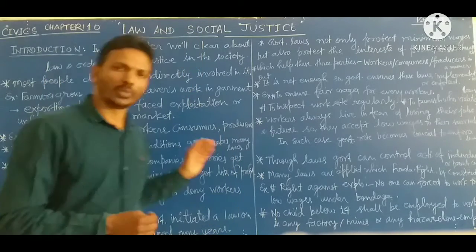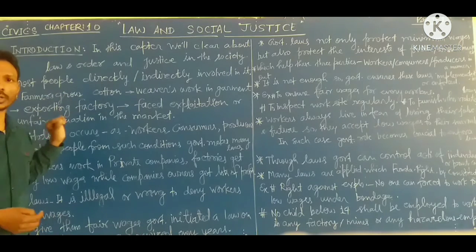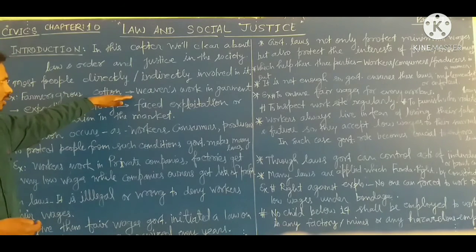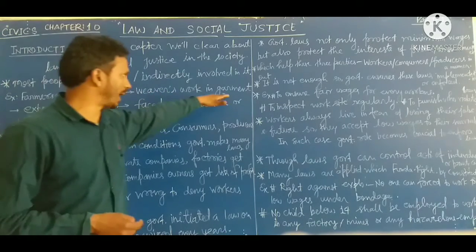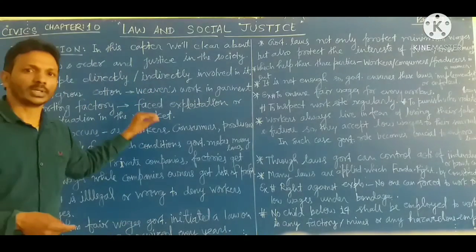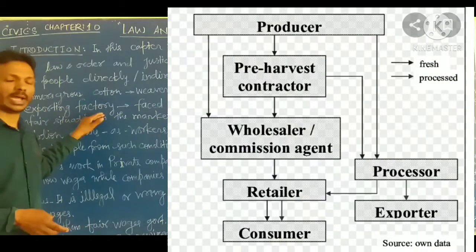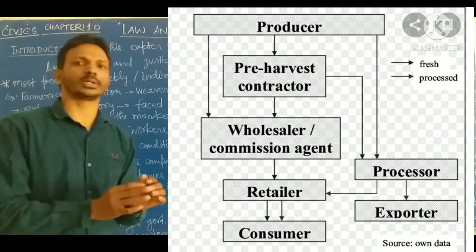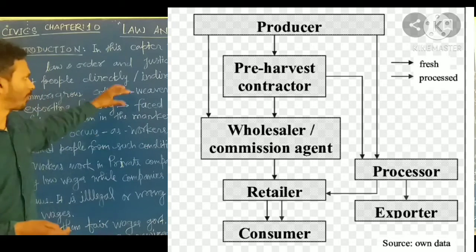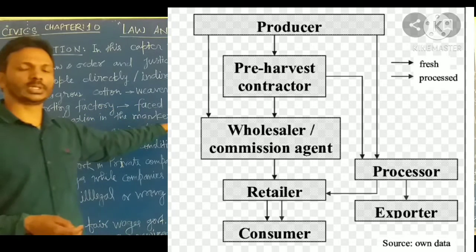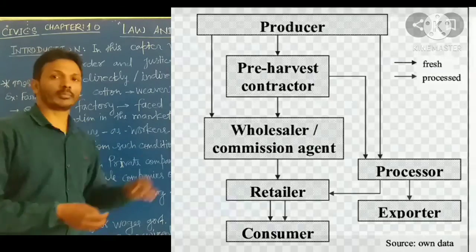The farmers grow cotton, which is taken by the weavers, and weavers convert the cotton into garments. After converting the garments, weavers share it to the exporting factories, and the exporting factories convert the garments into finished clothes and share it to the markets. But in all this process, we can see exploitation in many forms in the market.